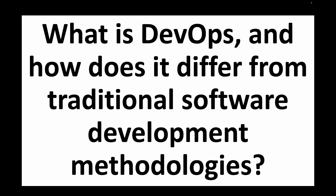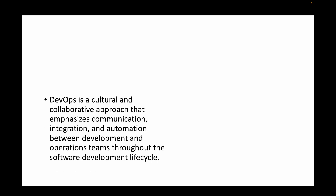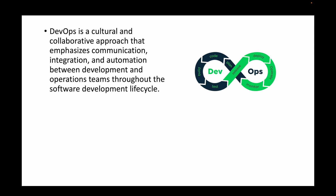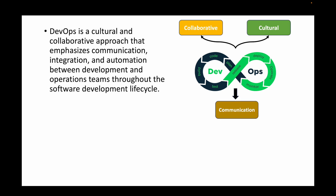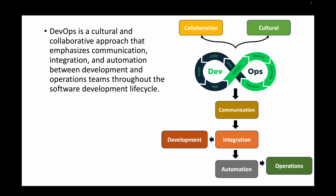The first question is: what is DevOps and how does it differ from traditional software development methodologies? DevOps is a cultural and collaborative approach which mainly emphasizes communication, integration, and automation between your development team and your operations team. Dev from development and ops from operations together is what we call DevOps, and we follow this throughout the software development lifecycle.